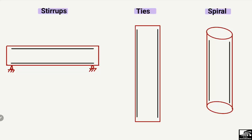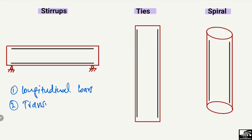Basically, there are two types of reinforcement. One is called longitudinal reinforcement — the longitudinal bars. The second type is known as transverse reinforcement — the transverse bars. In the case of transverse reinforcement, we have three main subtypes: stirrups, ties, and spirals.